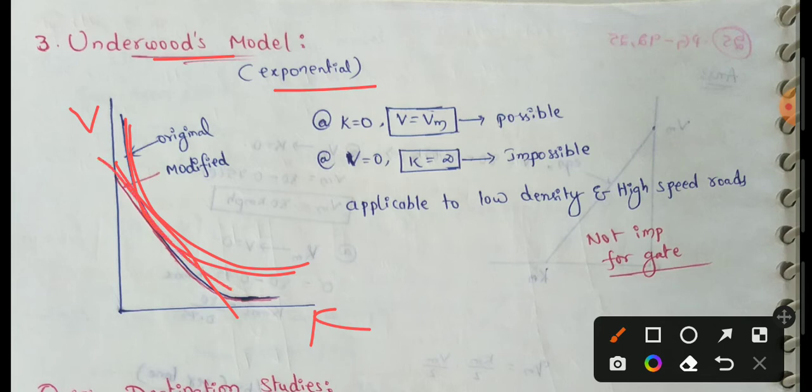If k is equal to 0, density is at maximum — so that is impossible. Therefore, it is applicable to low densities and high speed conditions.